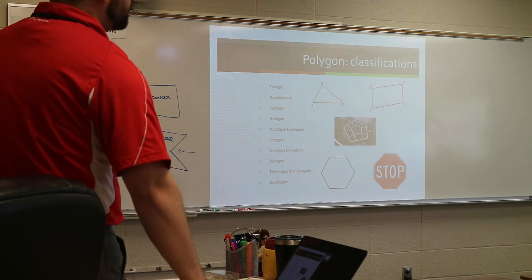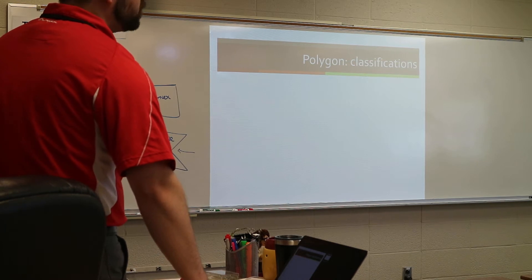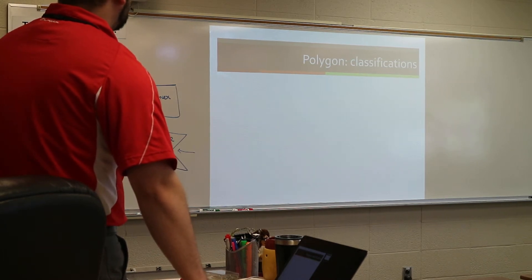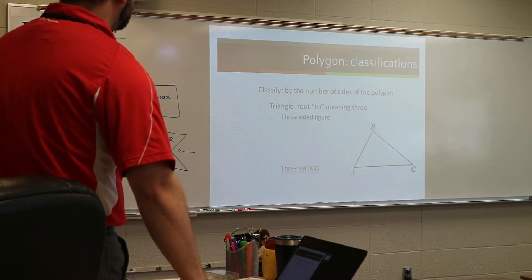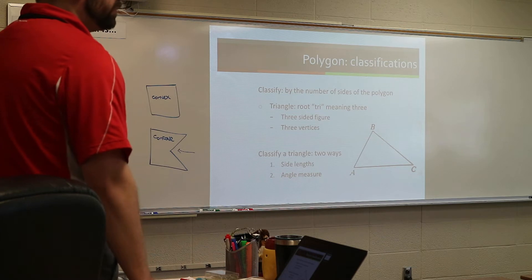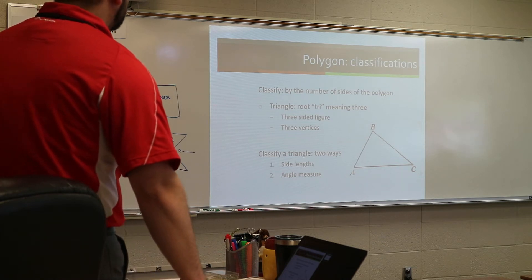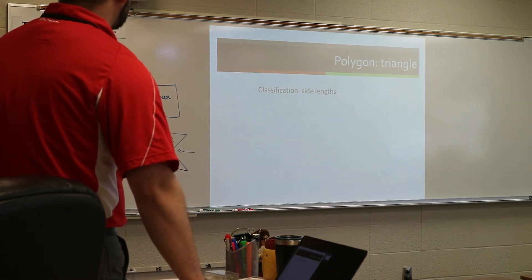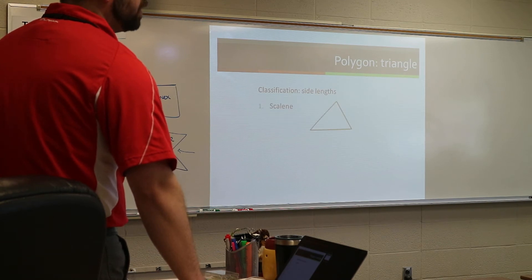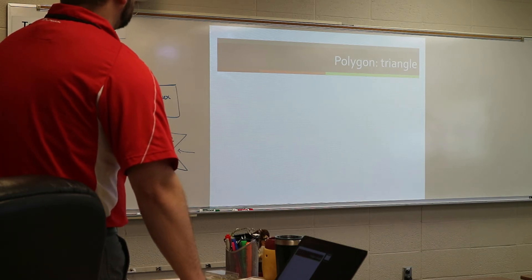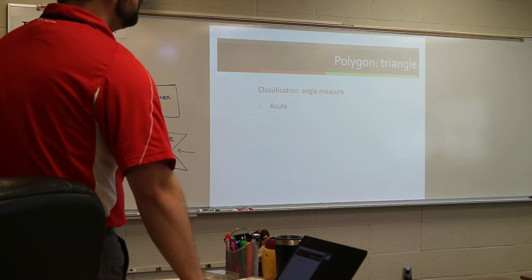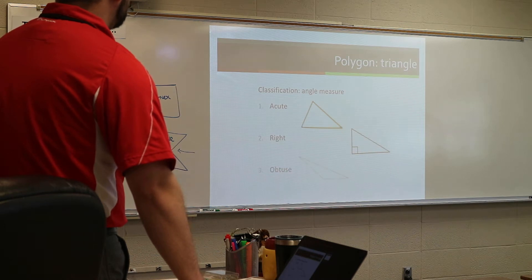Then we went into triangles — the different types of triangles. For triangles, you can call them by their side lengths or by their angles. Scalene means all three sides are different. Isosceles means two sides are the same. Equilateral means all three sides are the same. By its angles: acute means all angles are less than 90. Obtuse. And right, where you have one right angle.